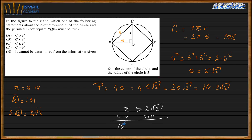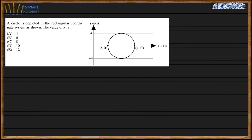The circumference is greater than the perimeter, so A is the answer. Next question: a circle is depicted in the rectangular coordinate system. We need to find the value of x. The diameter spans from one point to another and its length is 8.